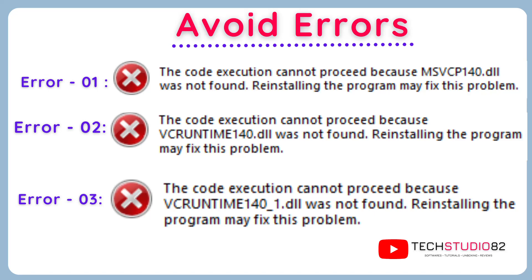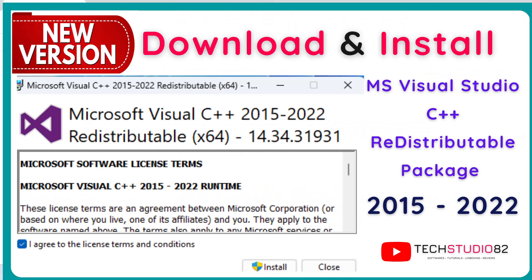In order to avoid these types of errors, please install the latest version of the redistributable package based on your system architecture. My system architecture is 64-bit, so I am going to download and install the 64-bit latest version of Microsoft Visual C++ redistributable package.